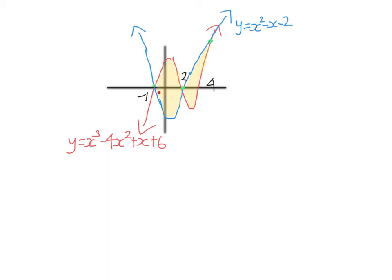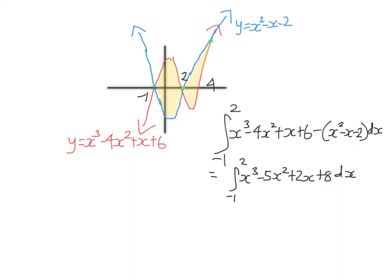So this area in here, we're going to have the integral from -1 to 2 because the red curve is on top. It goes first. We do red curve minus blue curve. And once again, we need to subtract the whole of the second curve. All right, let's make this easier to work with by collecting like terms.